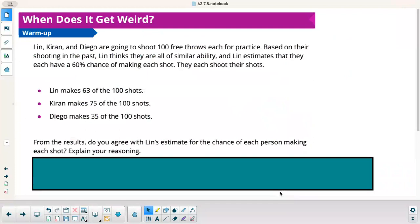Alright, our warm-up. Lynn, Kieran, and Diego are going to shoot 100 free throws each for practice. Based on their shooting in the past, Lynn thinks that they are all of similar ability, and Lynn estimates that they each have a 60% chance of making each shot. They each shoot their shots. Lynn makes 63 of 100, Kieran makes 75 of 100, and Diego makes 35 of 100. From the results, do you agree with Lynn's estimate for the chance of each person making each shot? Explain your reasoning.